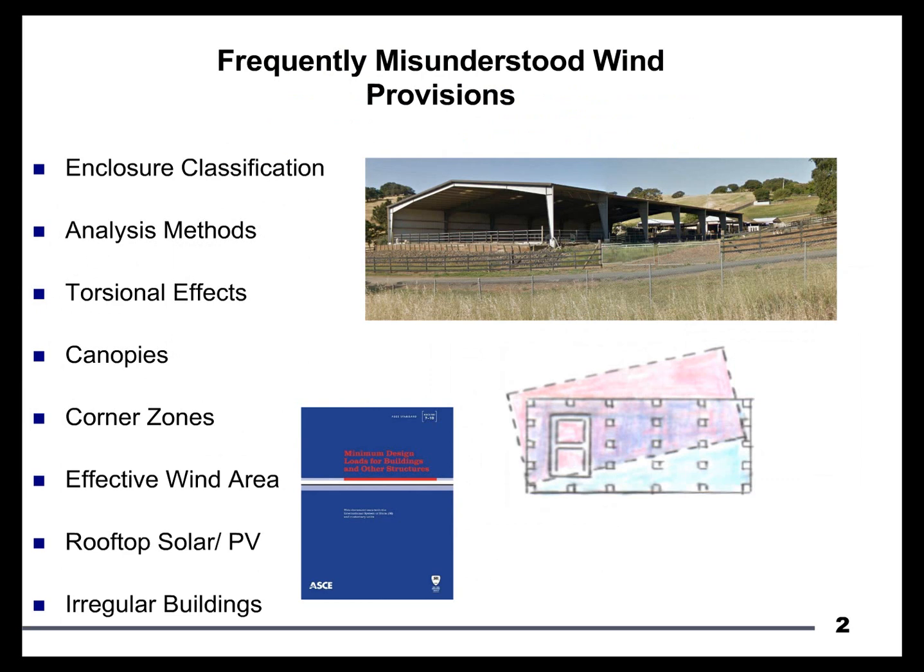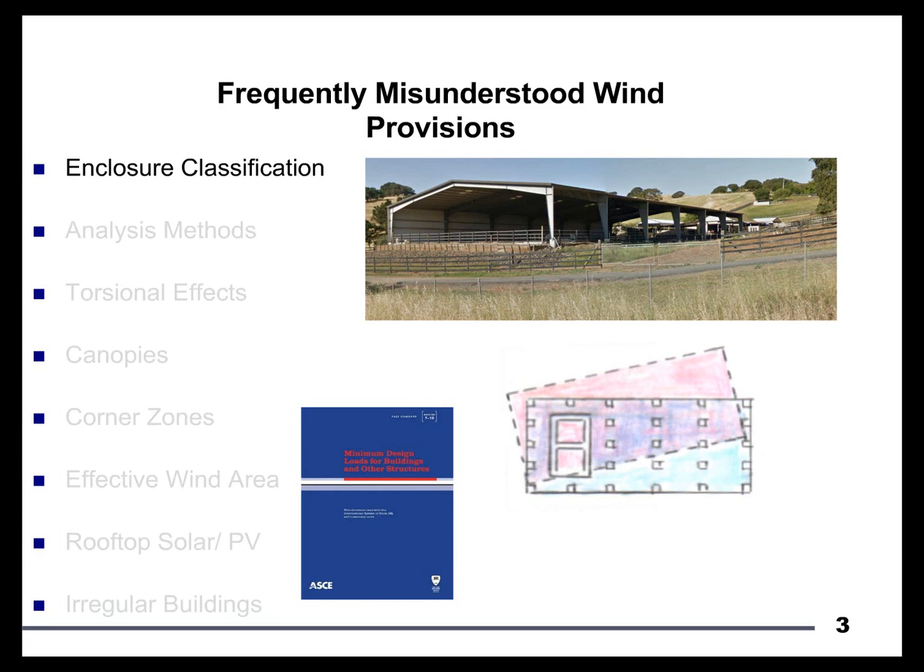The topics we'll discuss today will be Enclosure Classification, Analysis Methods when generating wind loads, Torsion specific to wind loads, and a handful of quick-hitting topics: canopies, corner zones, effective wind areas, and rooftop solar PV. We'll finish our third segment talking about irregular buildings — that's one of those areas where the code is relatively silent. We'll get started with our first segment, which is Enclosure Classification.